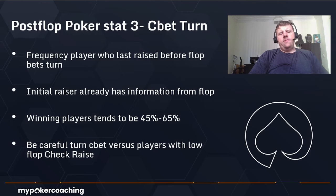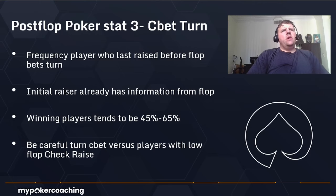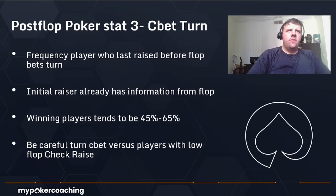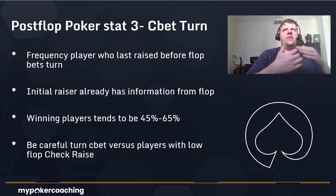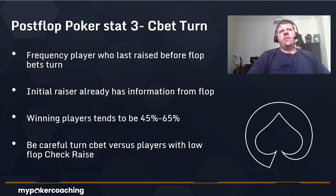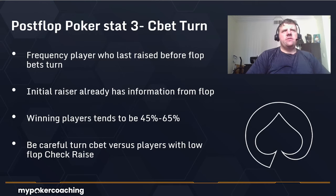Postflop stat number three is C-Bet Turn — the double barrel. This is how often the preflop raiser bets the flop and then bets the turn. The caller on the flop has revealed information: top hands likely check-raised, bottom hands folded, so the caller is left with middling hands. Winning players tend to have a c-bet turn stat around 45 to 65 percent — I normally tell students around 55 percent in tournament poker. You want to be very aggressive on the turn and attack that capped, middling range.